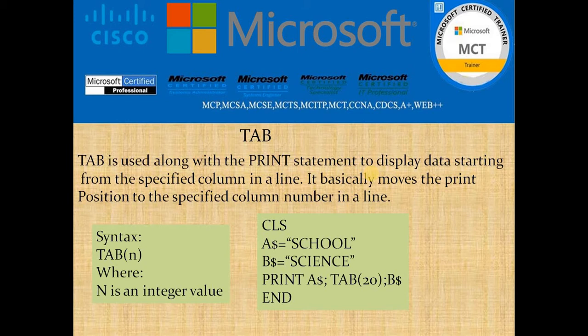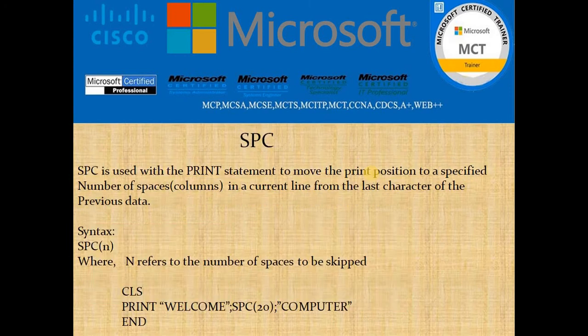Looking at the syntax: TAB(n) where n stands for an integer value. For example, A$ equals 'School' and B$ equals 'Science'. When I write PRINT A$, it executes in the first row, first column. After that I give TAB(20), which counts to column number 20 and the value of B$ gets printed there — meaning there will be a certain gap between the two words. The main purpose of TAB is to position your cursor at a user-specified column number so you can display output with gaps.